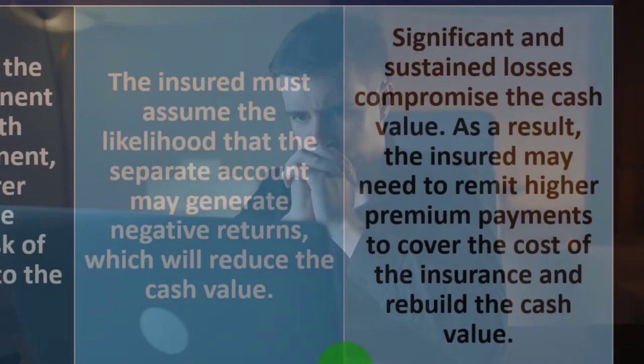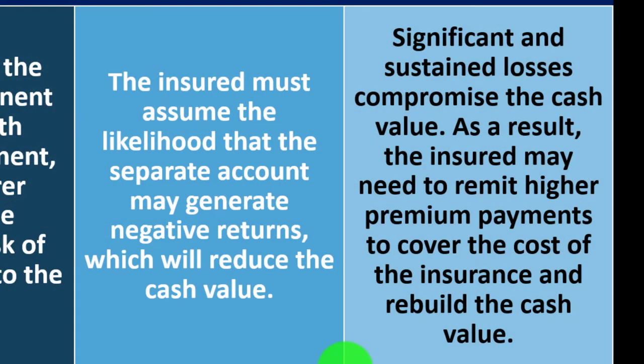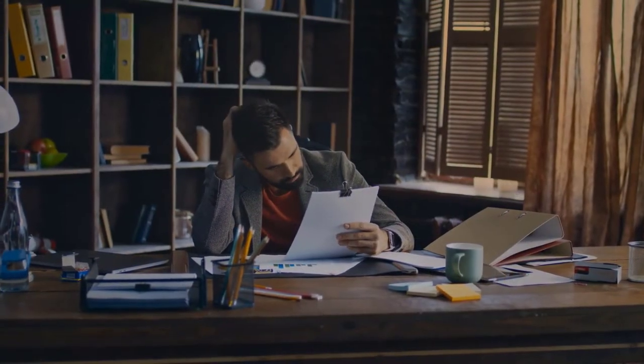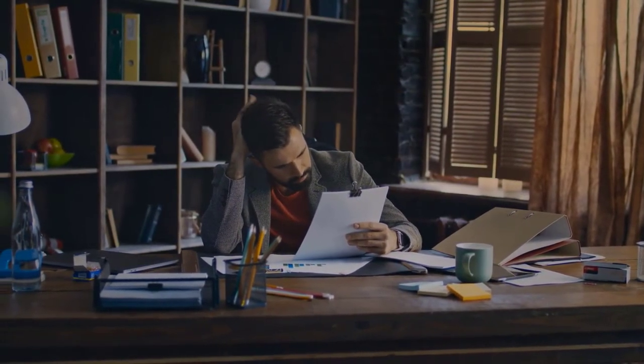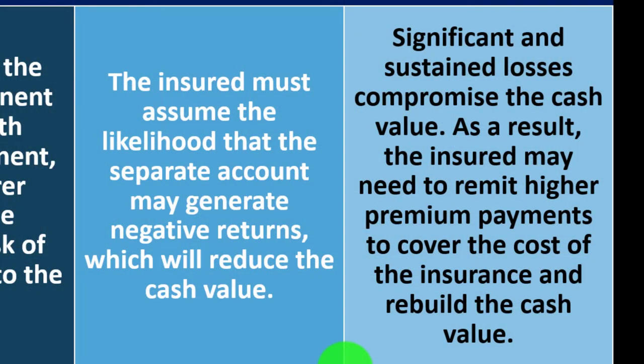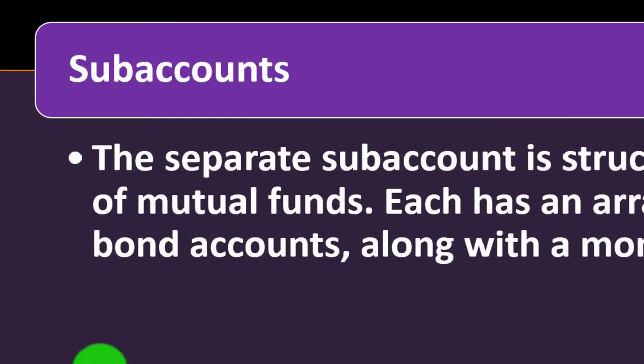This is a concern when talking about insurance, which is there to mitigate risk. We're trying to mitigate the risk of dying, but now we're also taking on market risk. If the market crashed and then we died, that would be a bad series of events. As a result, the insured may need to remit higher premium payments to cover the cost of the insurance and rebuild the cash value.